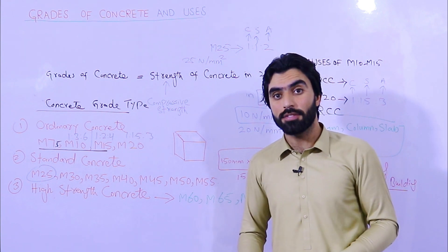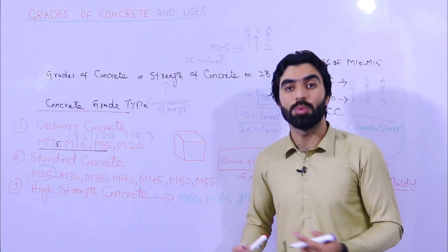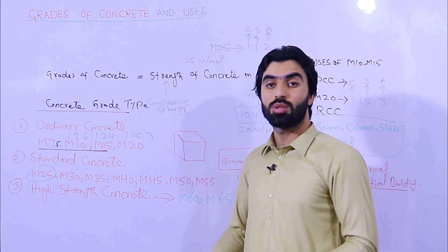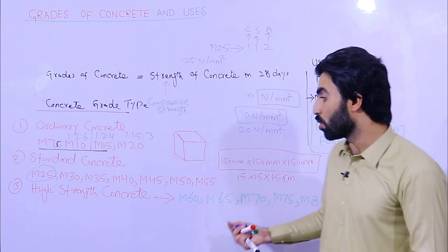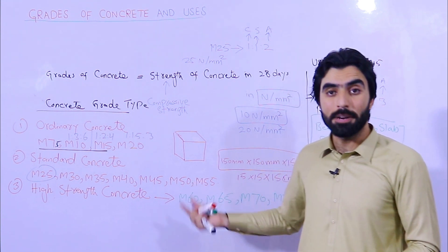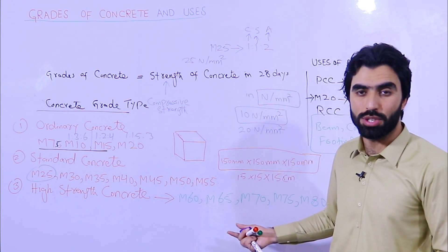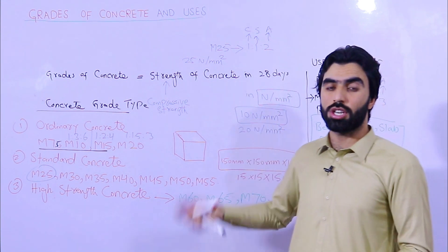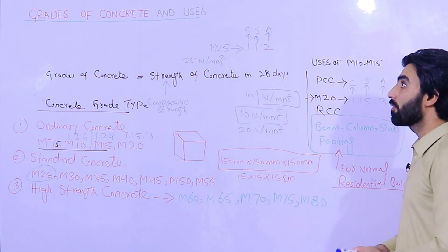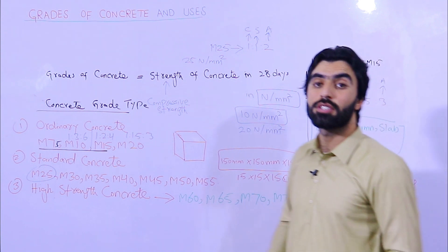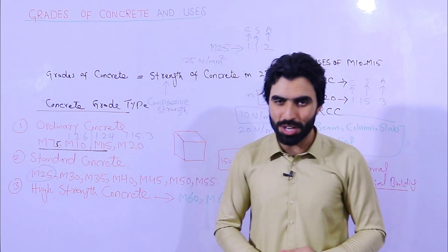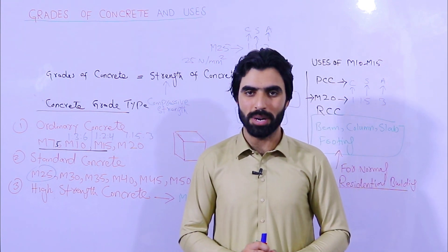High strength concrete — M60 to M80 — is used in roads, mega projects, and airports where there is a very high structural load. That concludes today's topic on grades of concrete, their types, and their uses. Hope this video helps. Thanks for watching, see you in the next video. Goodbye.